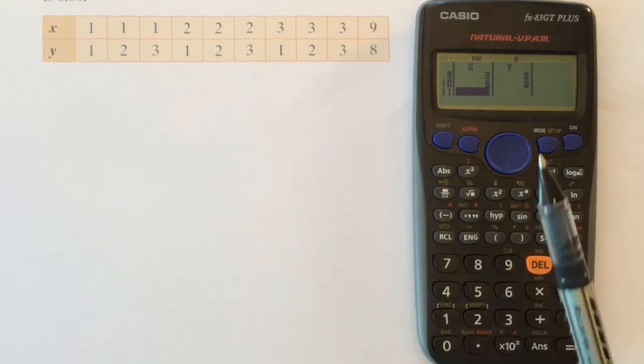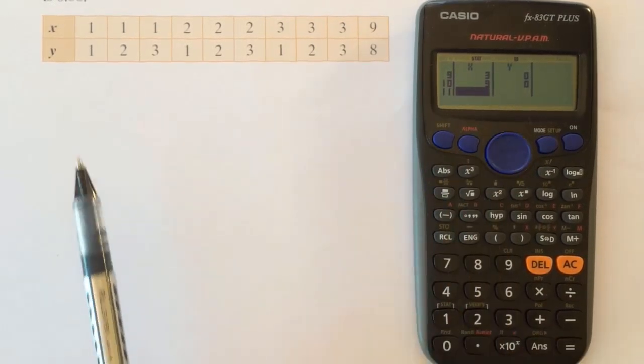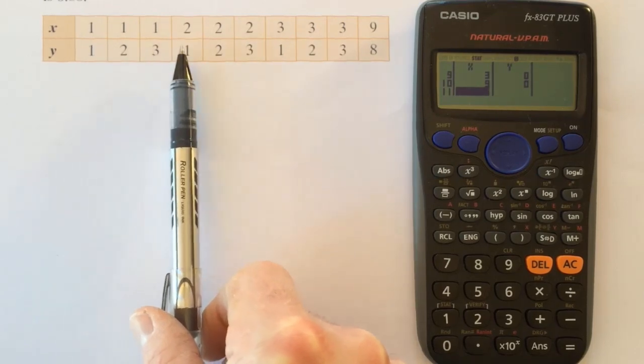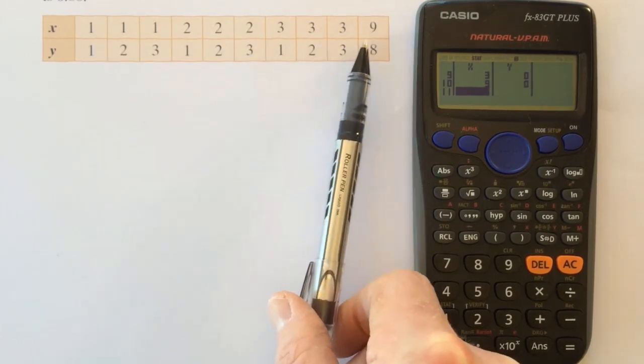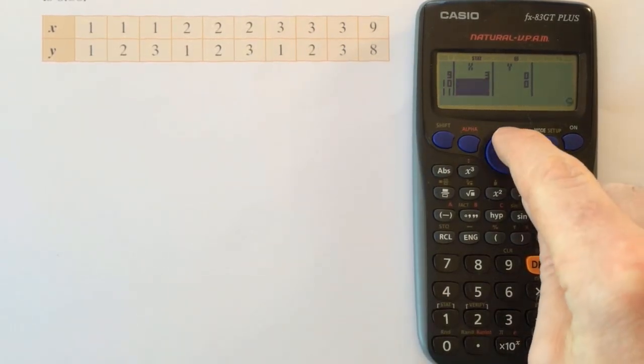Now just double check that you're right. Are there 10 pieces of information entered? 1, 2, 3, 4, 5, 6, 7, 8, 9, 10. I could use the cursor to check that all these numbers are correct as well.